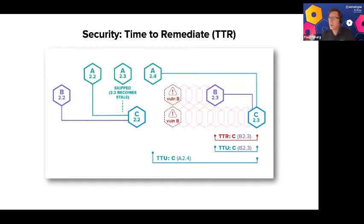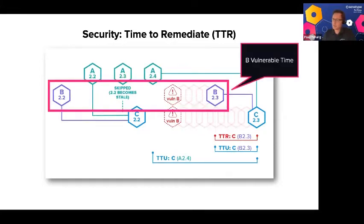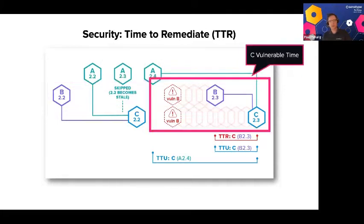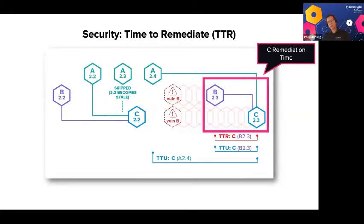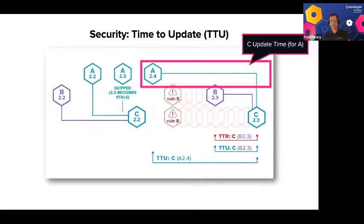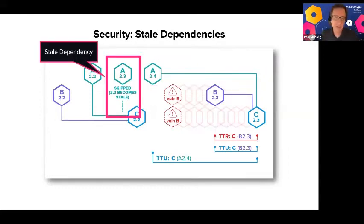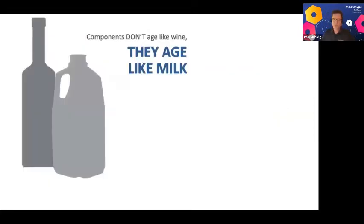If a vulnerability is discovered in component B, there's a period of time we're vulnerable. We track that vulnerability window for both B and C, and then the remediation time once B gets fixed and C consumes that fix. We also look at the update time for stale dependencies. Open source doesn't age like wine — it ages like milk.